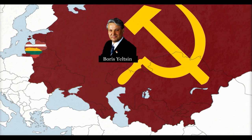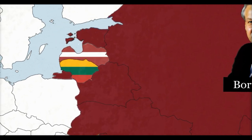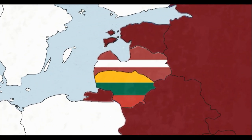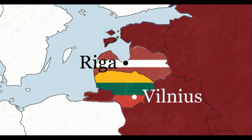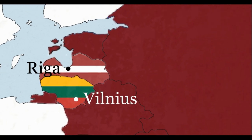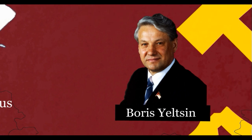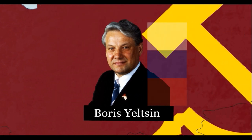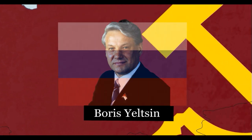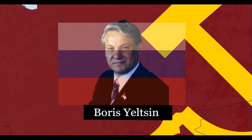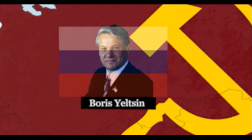In response to their independence declarations, Gorbachev sent Soviet forces into Vilnius and Riga, resulting in a total of 17 deaths. In response, Yeltsin condemned the crackdown and declared himself commander-in-chief of Russian forces, effectively telling them not to take orders from Gorbachev, and he called on Gorbachev to resign and dissolve the Union.